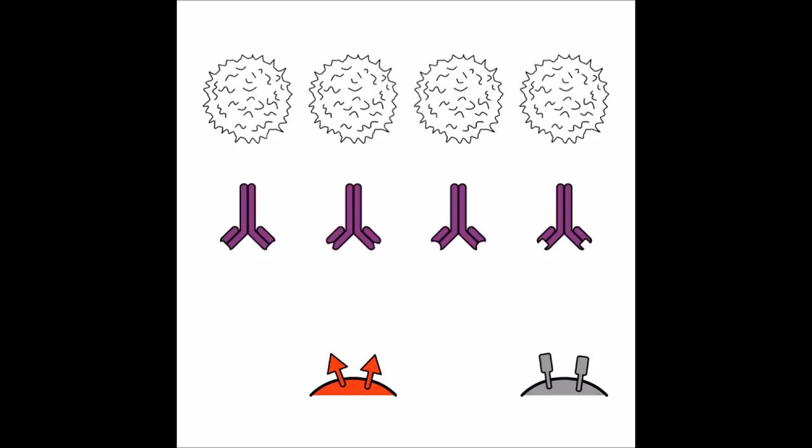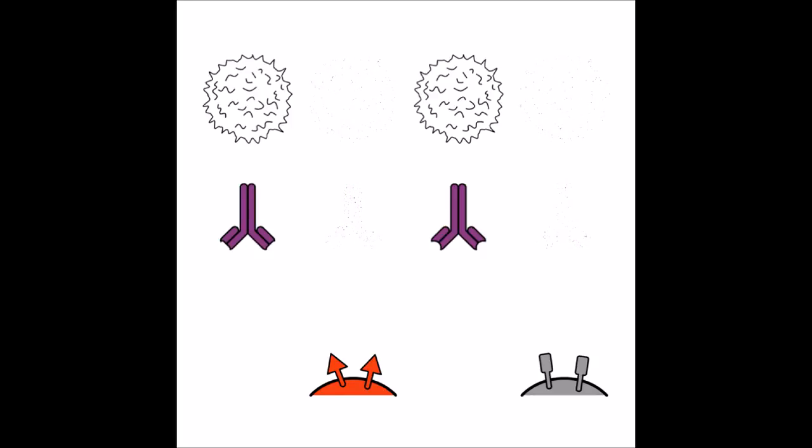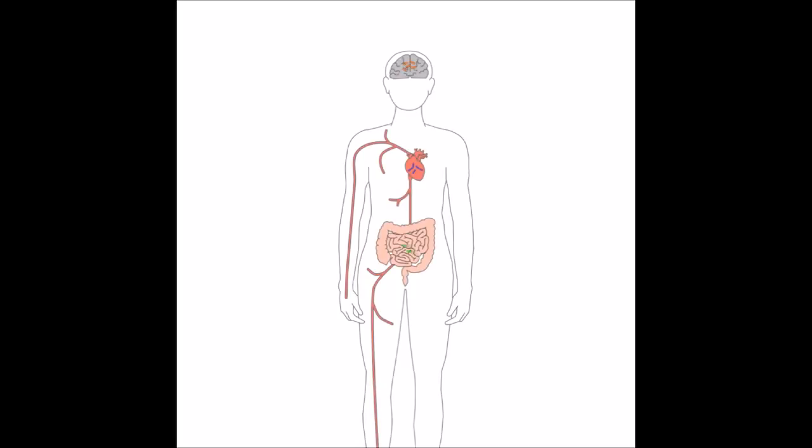At the same time, our body has mechanisms that make sure that we don't have B cells that make antibodies against our own surface antigens, so that we don't attack ourselves. As you can see, antibodies are one of the most powerful tools the immune system has to defend our body against pathogens.